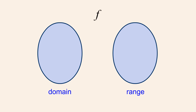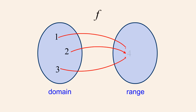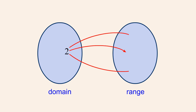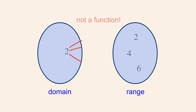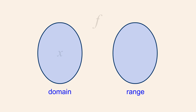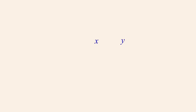Although it is possible for a function to map more than one domain value to the same range value, a function can never map a domain value to multiple range values. The domain and range of real-valued functions of a real variable often consist of an infinite number of values. Since we can't list every value, we represent them using the variables x and y and visually represent the infinite set of ordered pairs of the function's graph using the Cartesian plane.